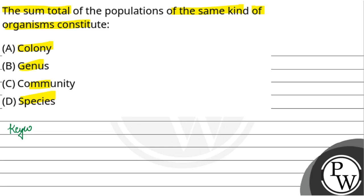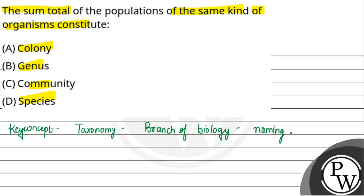The key concept here would be taxonomy. Taxonomy is a branch of biology that deals with naming, describing, and classification of all living organisms.